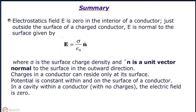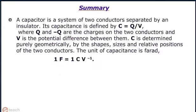A capacitor is a system of two conductors separated by an insulator. Its capacitance is defined by C equals Q by V, where Q and minus Q are the charges on the two conductors and V is the potential difference between them. C is determined purely geometrically by the shapes, sizes, and relative positions of the two conductors. The unit of capacitance is Farad. One Farad equals one coulomb per volt.